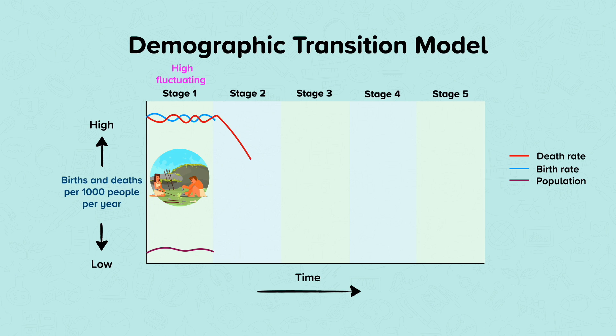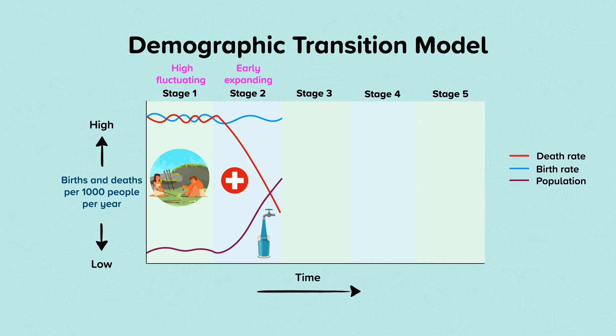Stage two begins when the death rate starts to fall dramatically. This begins when common diseases start to be treated and avoided more easily, and diet improves, causing the death rate to fall. Basic infrastructure such as clean water starts to be provided too. The birth rate however remains high, which means population starts to rise rapidly, and this stage is therefore known as the early expanding stage. This is largely due to the fact that many people rely on farming for food and income, meaning having lots of children to work on farms is helpful. Locations where this is typically found are the sub-Saharan countries of Africa.